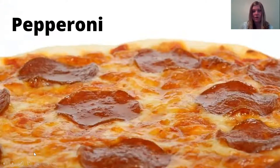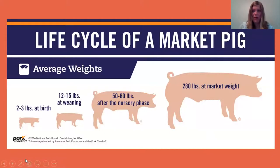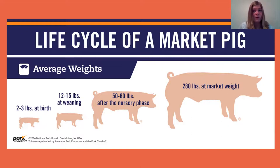Moving on to pepperoni — pepperoni is a meat. Does anyone know which animal pepperoni comes from? Pepperoni comes from pigs, and sausage comes from pigs too, so both of those meats are a type of pork. Some other types of pork that you might eat are bacon, pulled pork, ham, or pork chops — all of those things come from pigs.